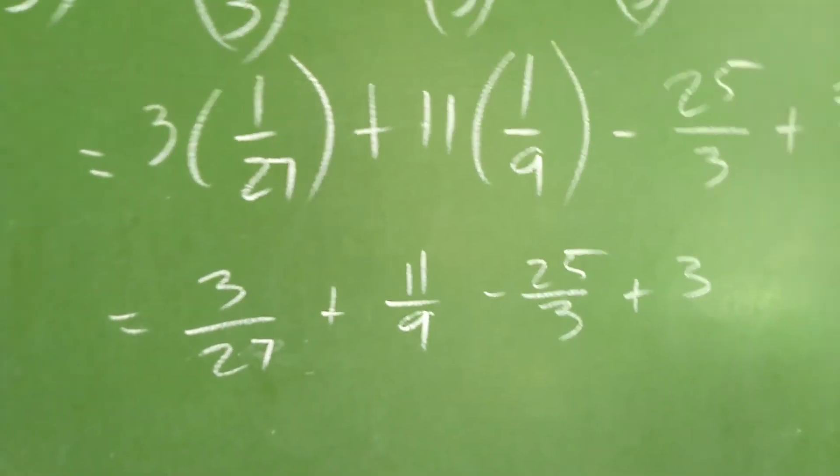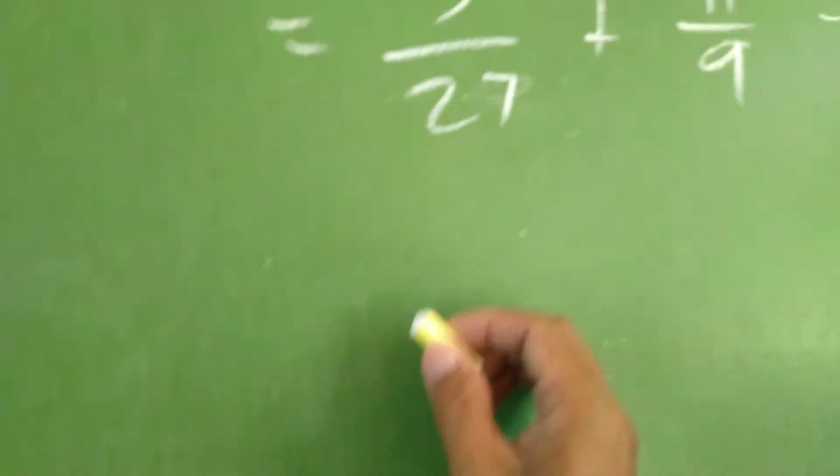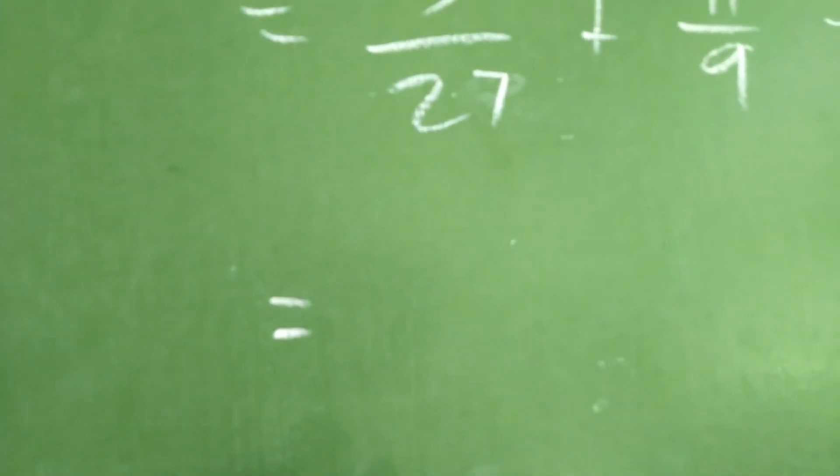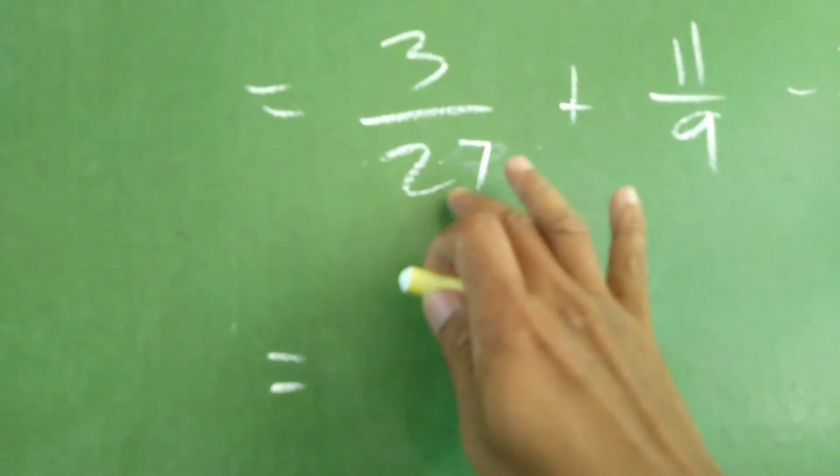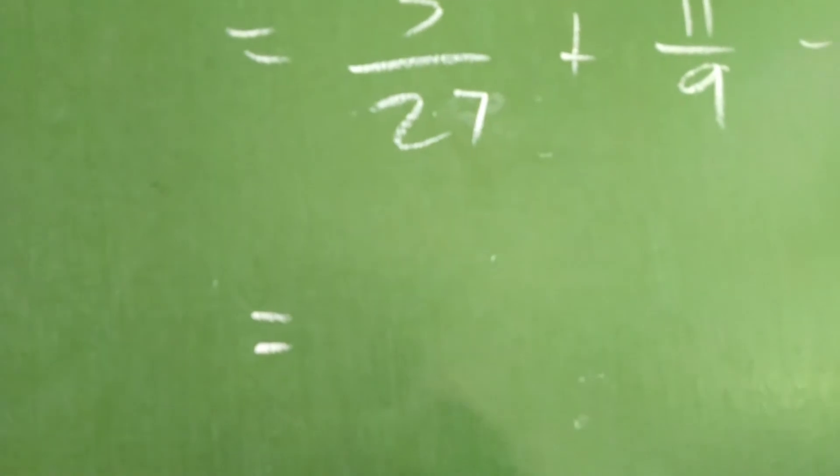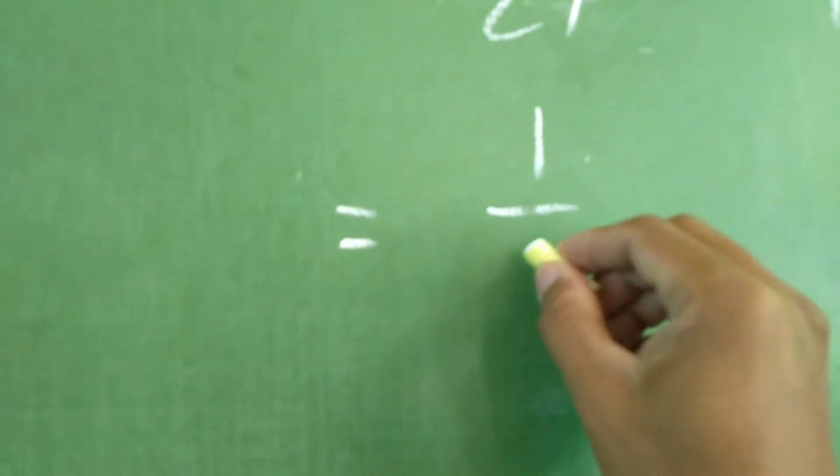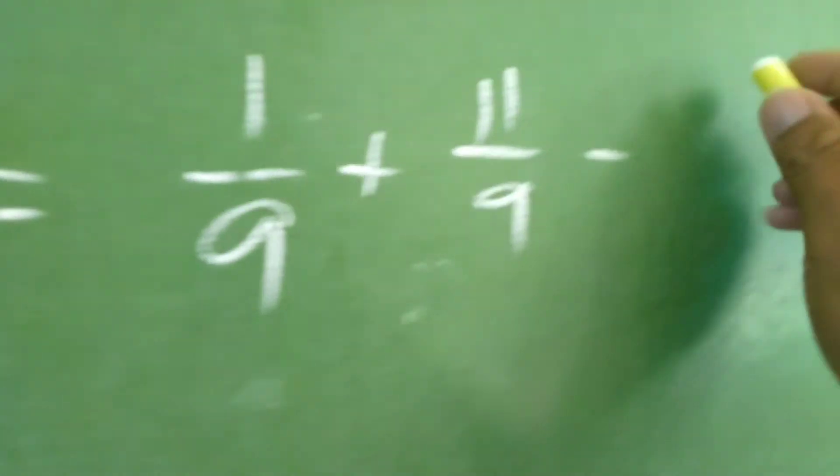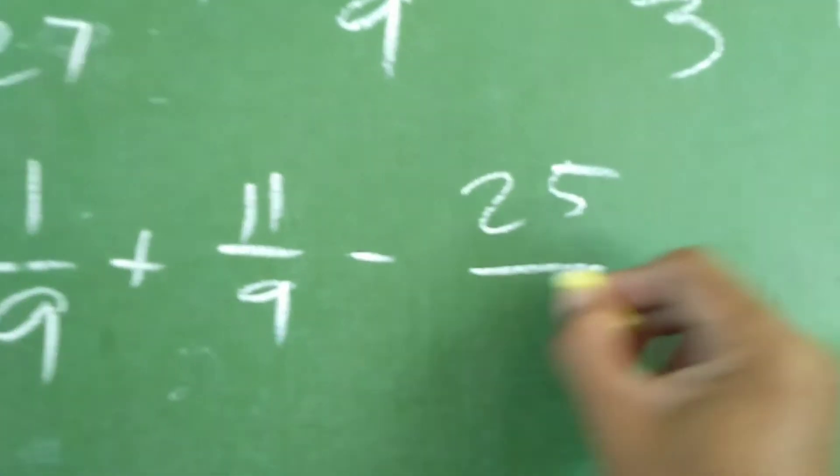The next is, simplify pa natin. Para hindi ito yung mahirapan at masyadong malaki yung magiging device or isimplify mo to. Lowest term mo to. 3 over 27, both of them are divisible by 3. So, we have 1 over 9 plus 11 over 9 minus 25 over 3 plus 3.